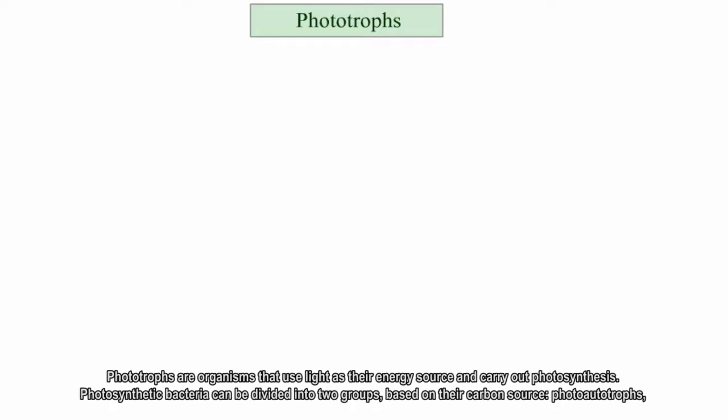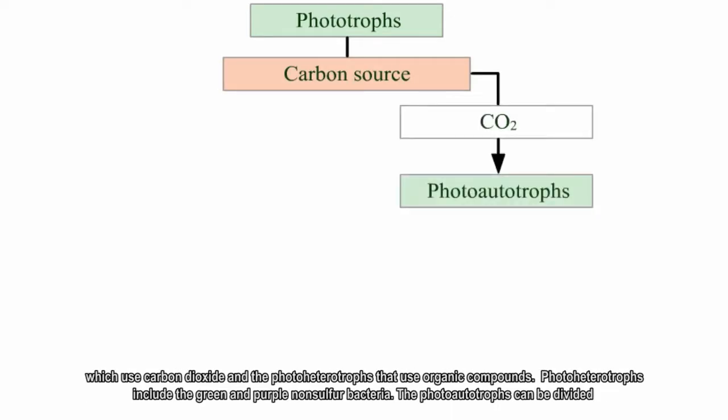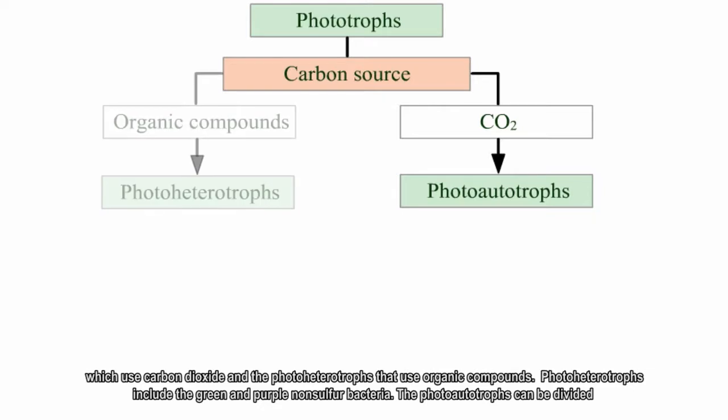Phototrophs are organisms that use light as their energy source and carry out photosynthesis. Photosynthetic bacteria can be divided into two groups based on their carbon source: photoautotrophs, which use carbon dioxide, and photoheterotrophs that use organic compounds.